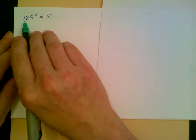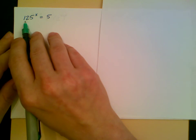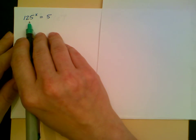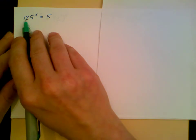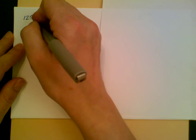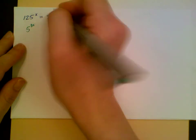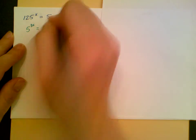Let's do these one at a time. Now, 125 is 5 times 5 is 25 times another 5 is 125. So this is 5 cubed, which means 125 to the x is 5 to the 3x. Now that's equal to 5.